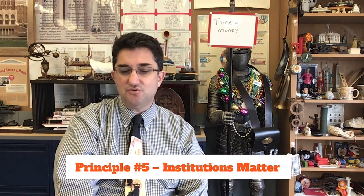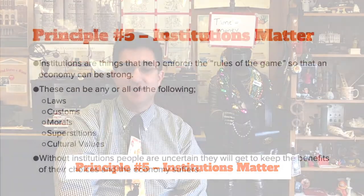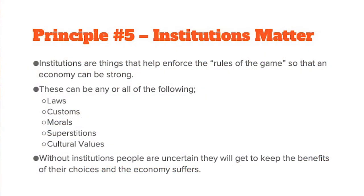Institutions are things that help enforce the rules of the game — another way to think of it is the rule of law. If you have rule of law and strong institutions, that helps your economy be strong. Institutions can be things like laws, customs, morals, superstitions, or cultural values. Without these institutions, people are uncertain that they will keep the benefits they're going to get out of their choices.